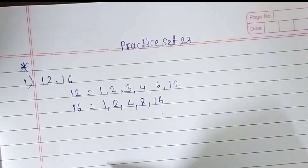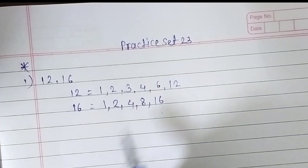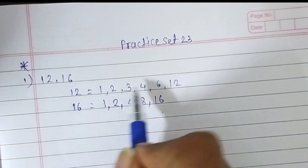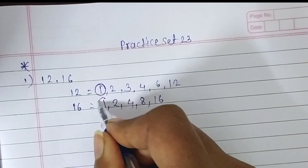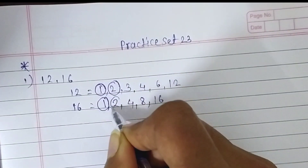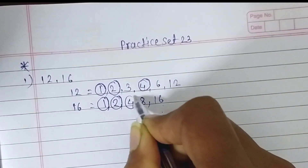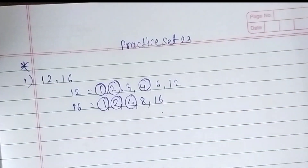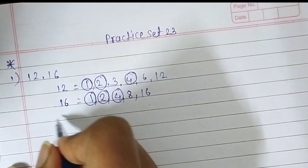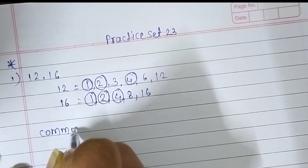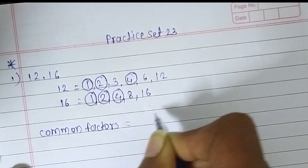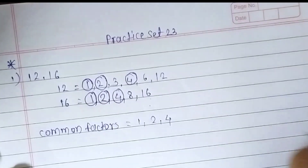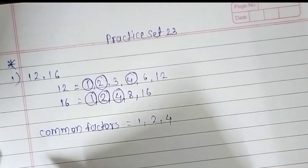Now we have to find the common factors. We make a circle around the factors which appear in both 12 and 16. 1 is common, 2 is common, and 4 is common. So the common factors of 12 and 16 are 1, 2, and 4. This is the solution of our first question.